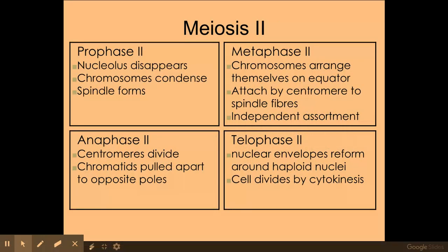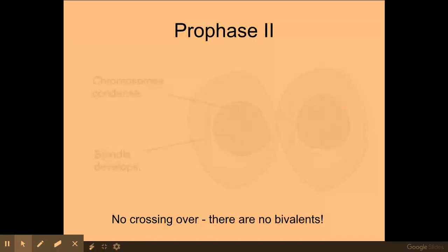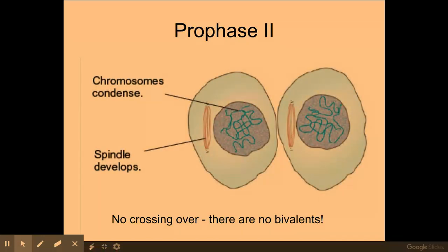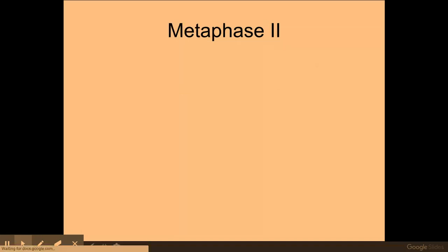We're then going to meiosis 2. So in meiosis 2 we have prophase 2, and again the spindle fibers will start to reform. My chromosomes will start to become more condensed. Now there is no crossing over in prophase 2 because I have no bivalents to do the crossing over between.